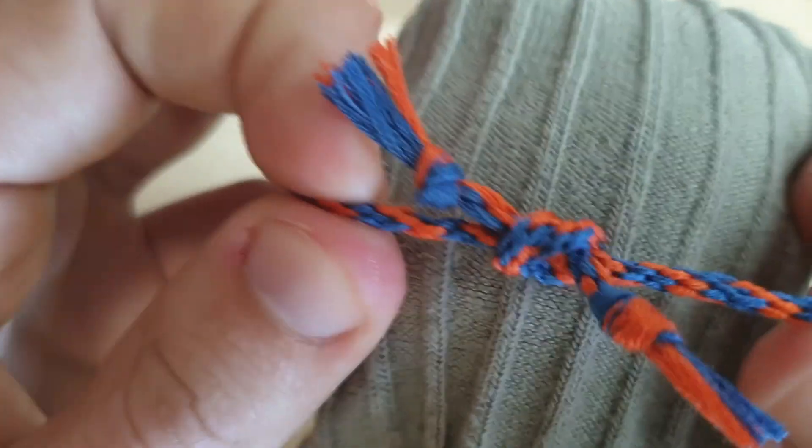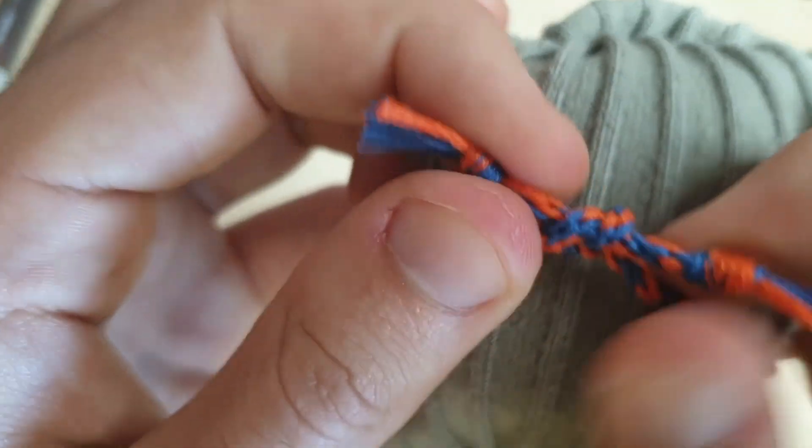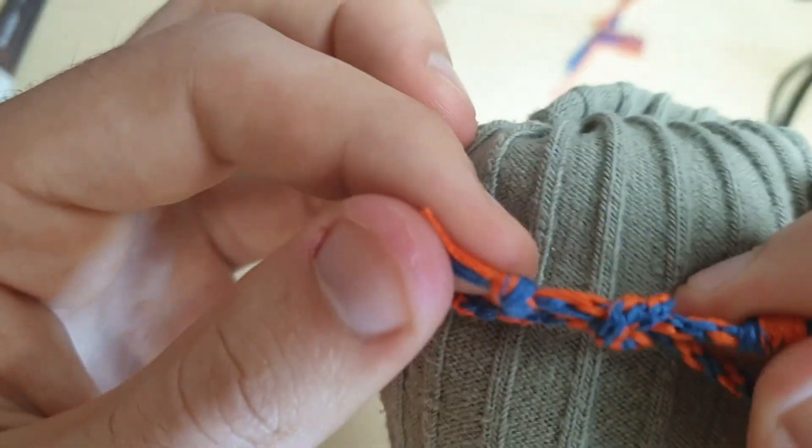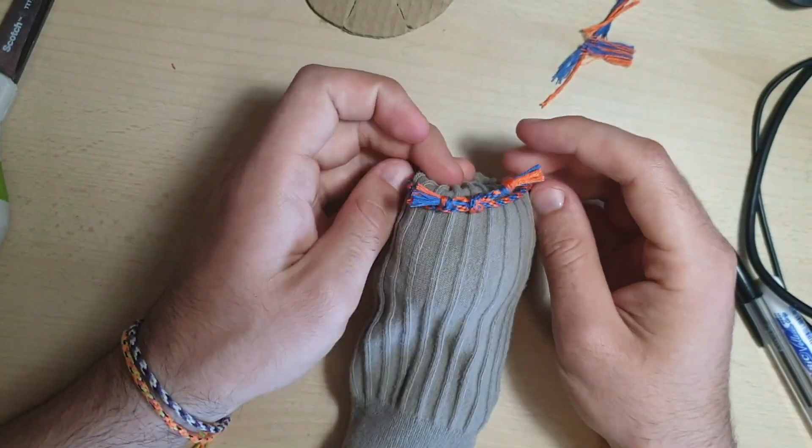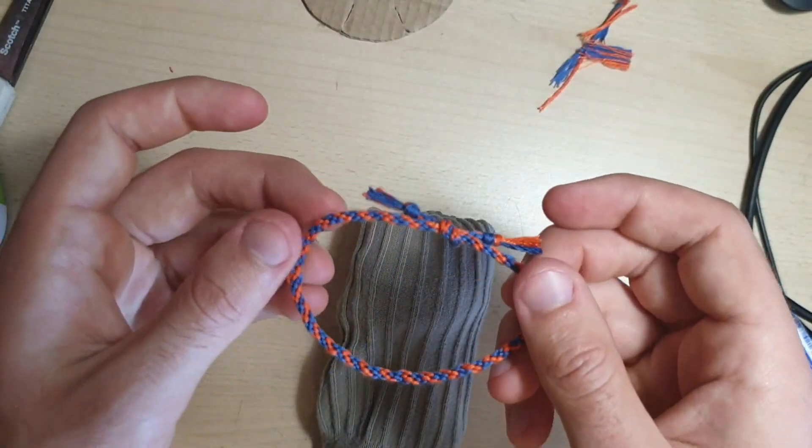Take a nice little knot there, and you tighten it. But you just got to be careful not to make it too tight around your arm. And there you have your friendship bracelet is complete.